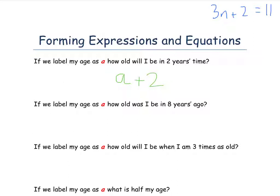In the second question, it says, if we label my age as a, how old was I 8 years ago? So I'm just changing the question here. How old was I 8 years ago? So yet again, my current age, we don't know what it is, so we're labeling it as a. And 8 years ago, well, 8 years ago means subtract 8. So 8 years ago, an expression for our age would be a, my current age, minus 8.